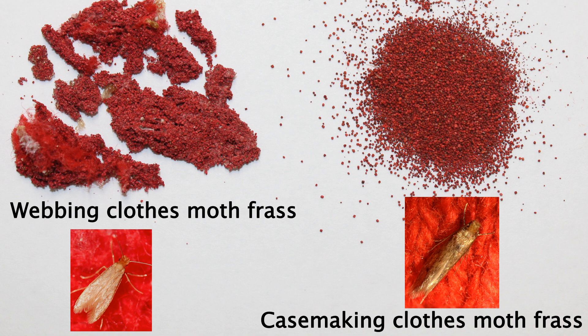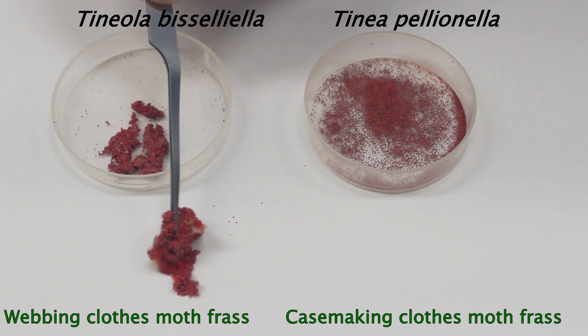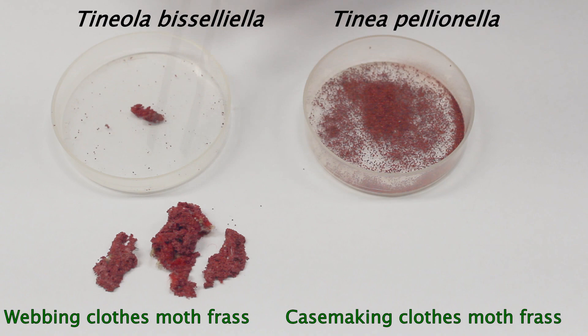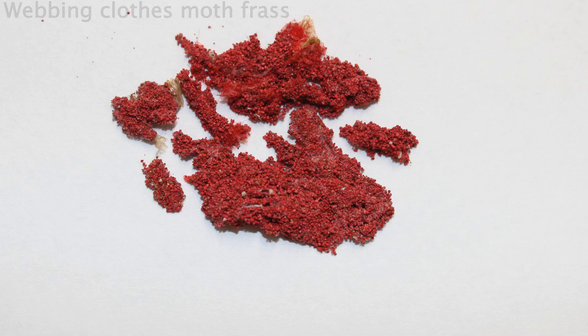Let's take a quick look at how to tell the difference between webbing clothes moth and case-making clothes moth damage by examining the frass from each. On the left we see the lumped excrement, otherwise called frass, from the webbing clothes moth after extensive feeding on a red wool sweater. On the right we see the dry granular frass from the case-making clothes moth after feeding on that same red wool.